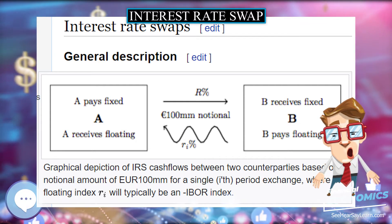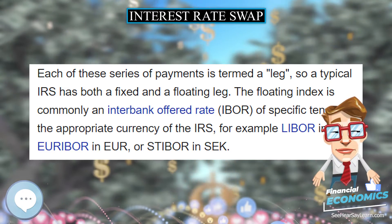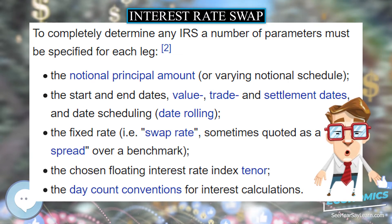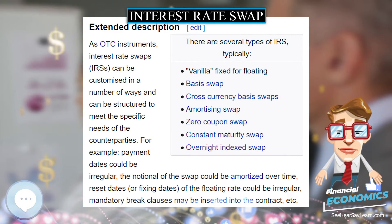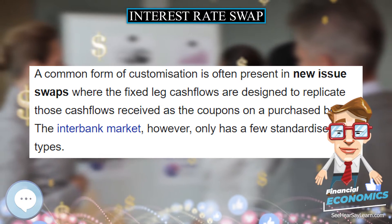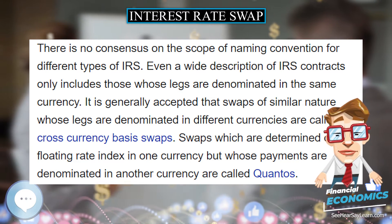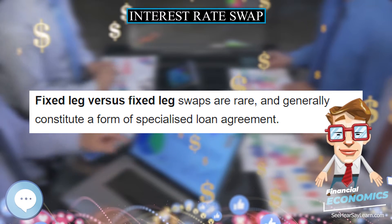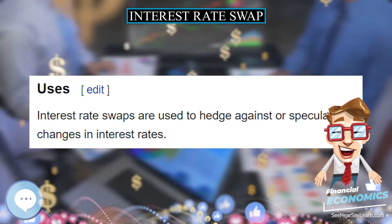Interest rate swaps are used to hedge against or speculate on changes in interest rates. Interest rate swaps are also used speculatively by hedge funds or other investors who expect a change in interest rates or the relationships between them. Traditionally, fixed income investors who expected rates to fall would purchase cash bonds, whose value increased as rates fell. Today, investors with a similar view could enter a floating-for-fixed interest rate swap. As rates fall, investors would pay a lower floating rate in exchange for the same fixed rate. Interest rate swaps are also popular for the arbitrage opportunities they provide. Varying levels of creditworthiness means that there is often a positive quality spread differential that allows both parties to benefit from an interest rate swap. The interest rate swap market in USD is closely linked to the EURODOLLAR futures market which trades, among others, at the Chicago Mercantile Exchange.